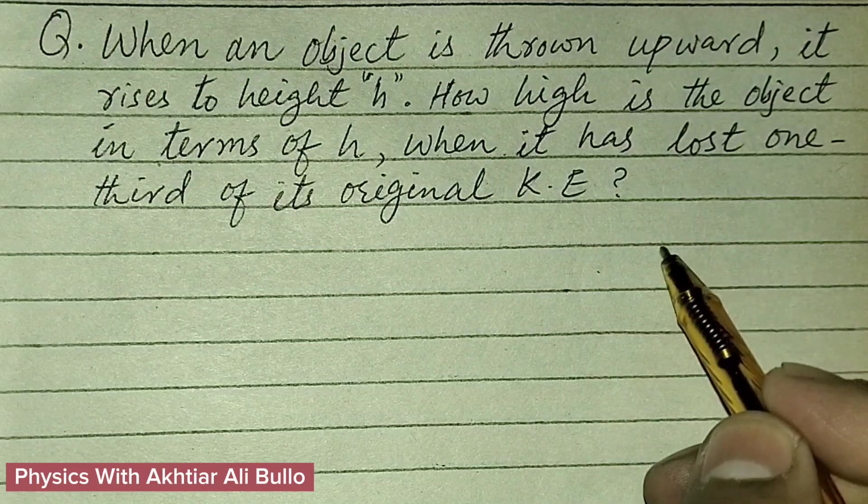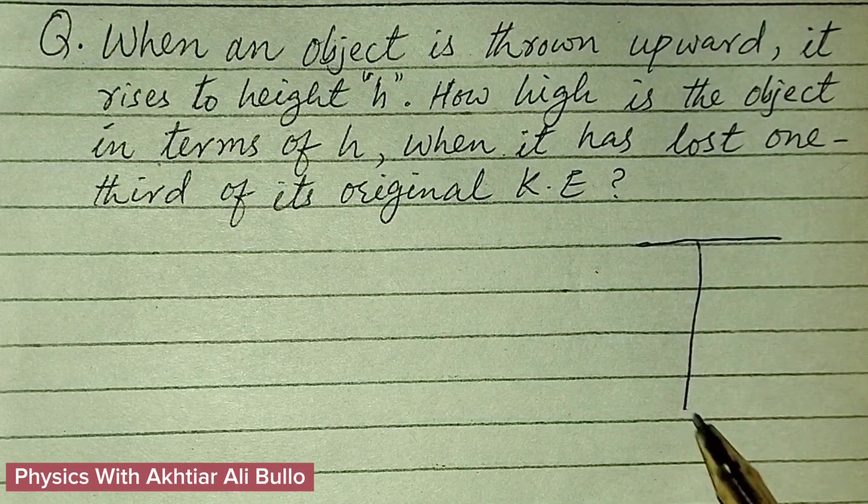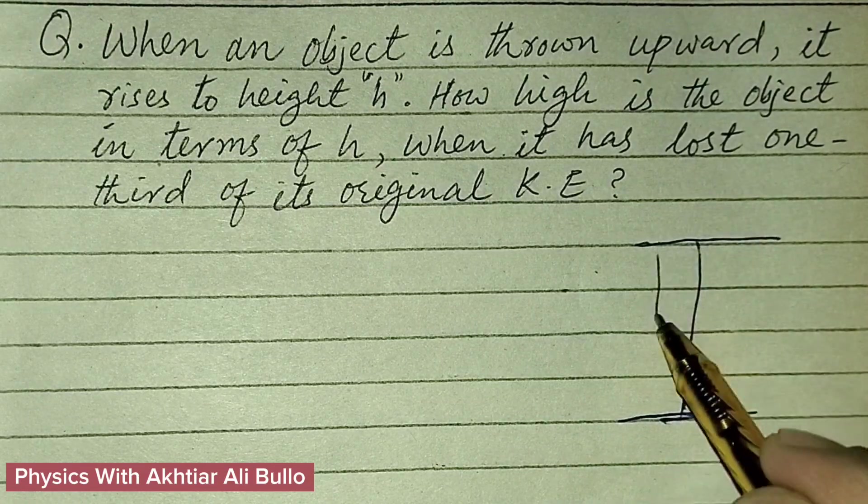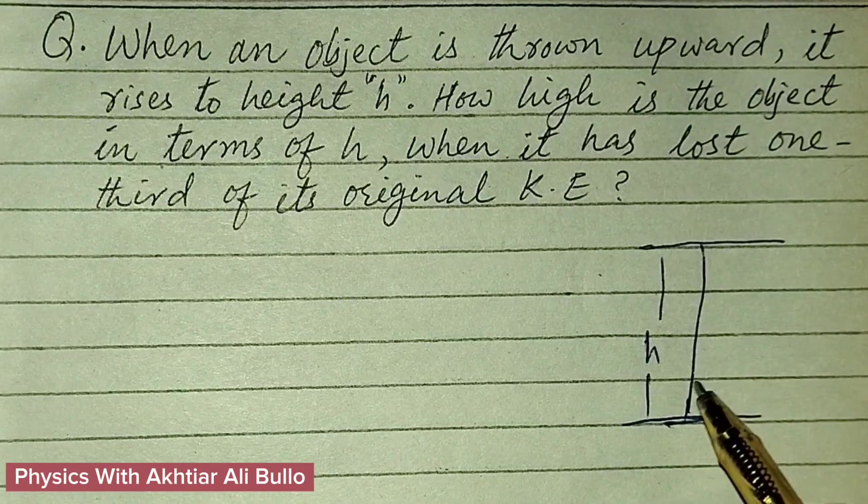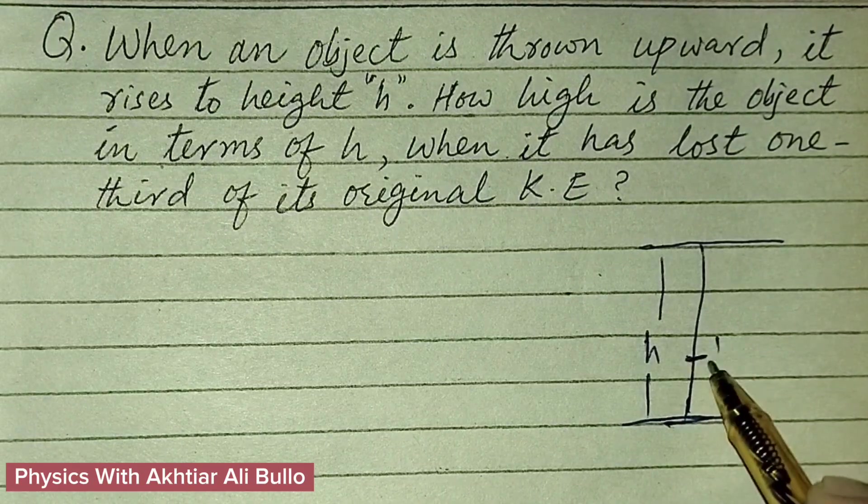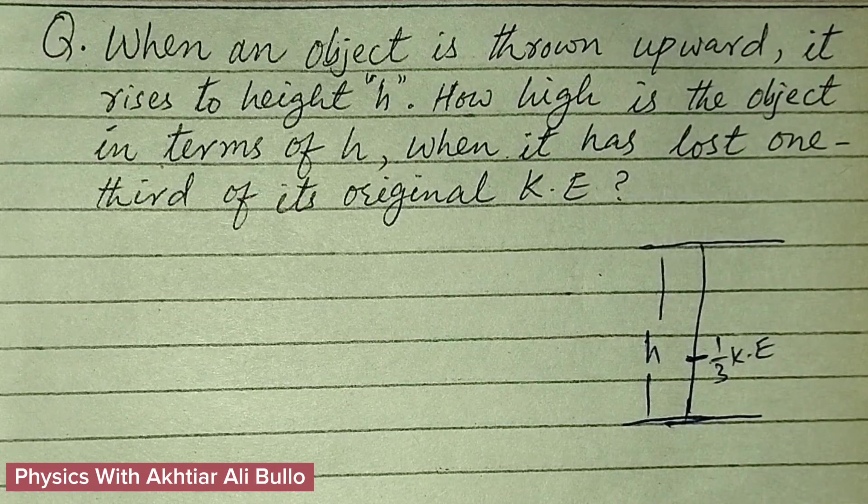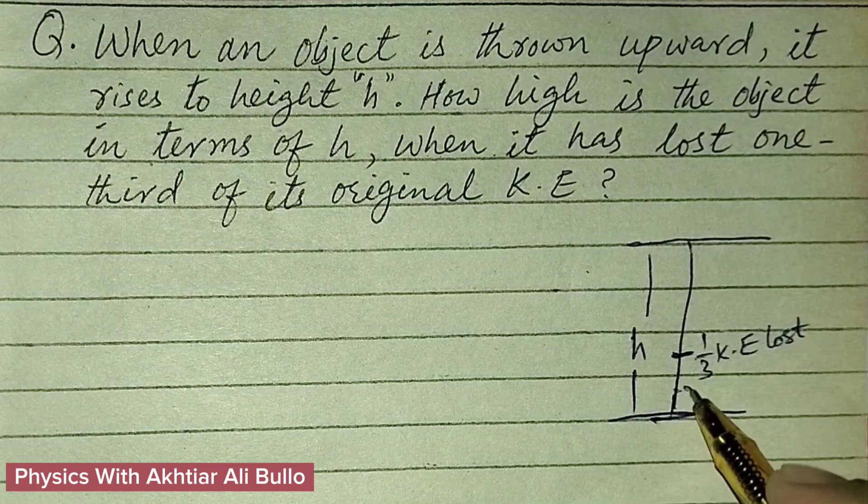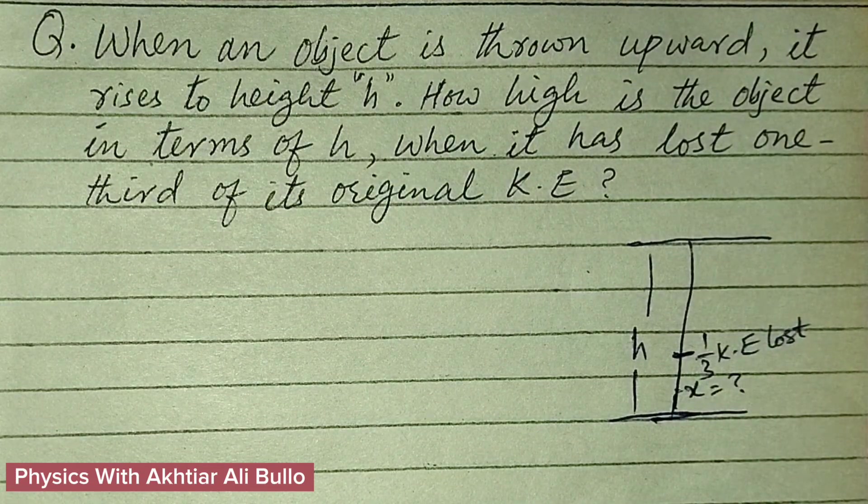As the object is thrown upward up to height h, when it has lost one-third of its original kinetic energy, we have to find x, means height x.